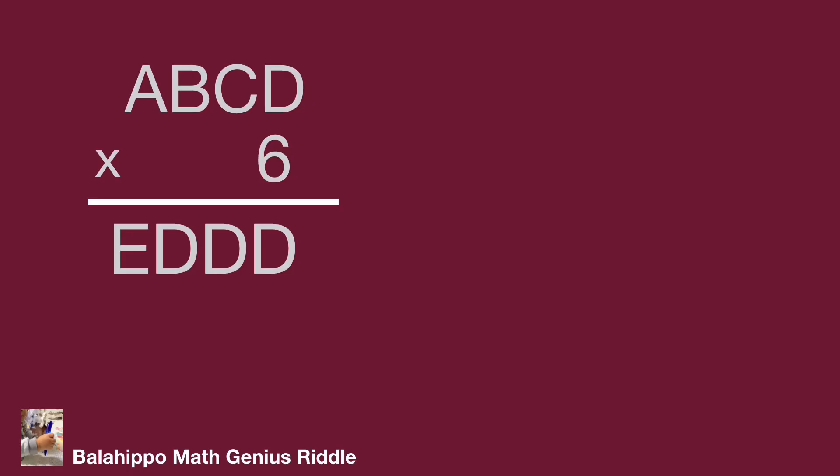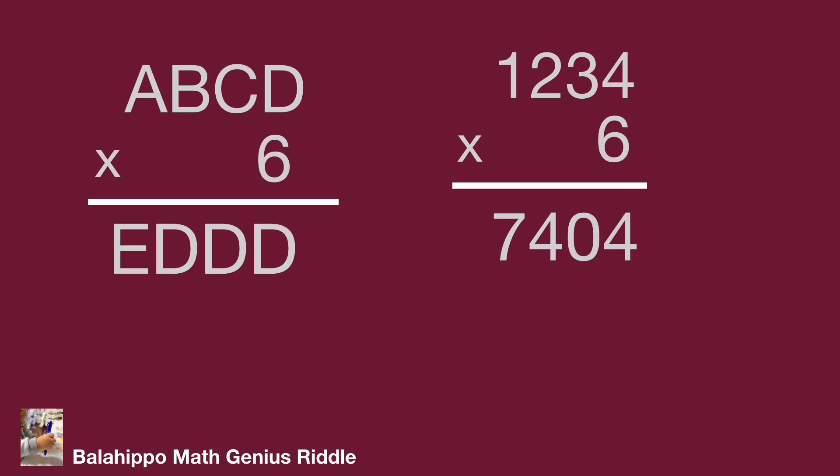A four-digit number A, B, C, D times 6 equals another four-digit number E, D, D, D. What's the meaning? Let me explain by an example. If A, B, C, D equals 1, 2, 3, 4, then times 6 becomes a new number 7, 4, 0, 4. That's the question.